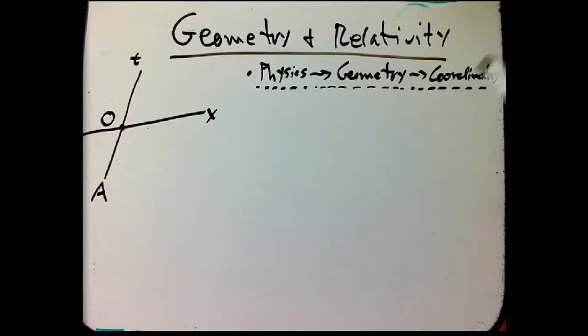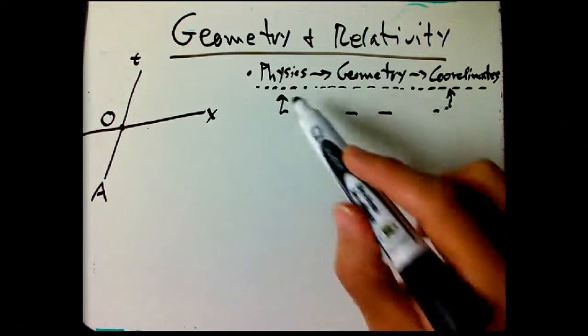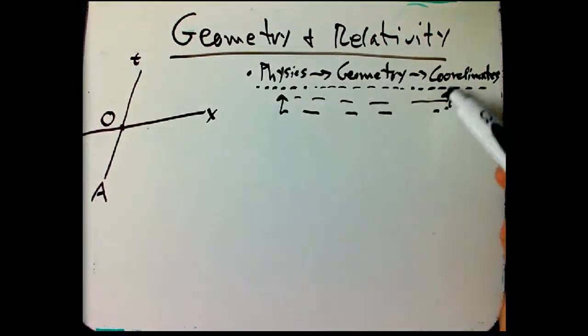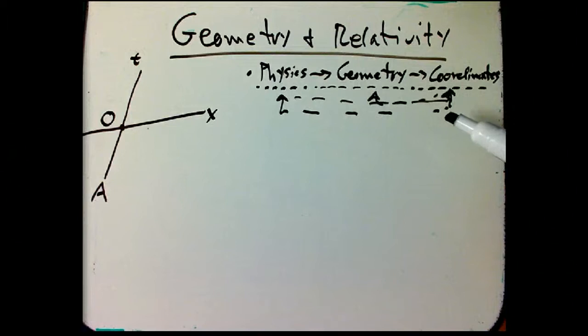Too often, I think, with relativity, you kind of start here, then express the physics in the coordinates, and then you show that it didn't really depend on the coordinates, and then maybe as an afterthought you think about geometry. And I like this progression better.